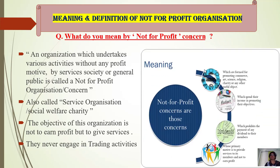Not-for-profit organizations are formed for promoting commerce, arts, science, religion, charity, or any other useful object. They spend their income in promoting their object. They prohibit the payment of any dividend to their members — that means they cannot give dividends to members because this is a non-profit organization. Their primary motive is to provide services to its members and not to earn profit.